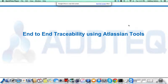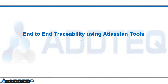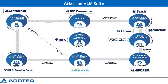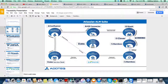Hello everyone. In this demo, I will present how you can achieve end-to-end traceability using Atlassian tools. These are the tools using which we can achieve end-to-end traceability, beginning with Confluence.